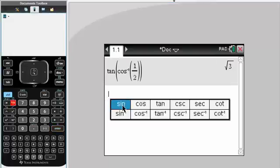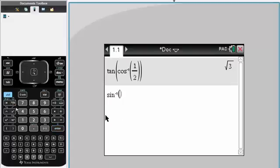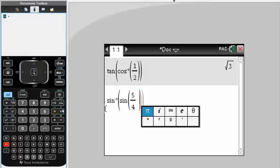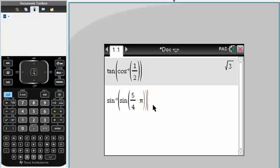The second question we had sin inverse parenthesis sin in the inside, and we had 5 divided by 4 times pi. Simply hit pi and simply enter. And this is our second answer. And that's all you need to do to solve inverse trig function question using the TI Inspire.